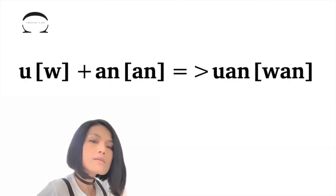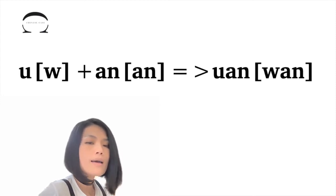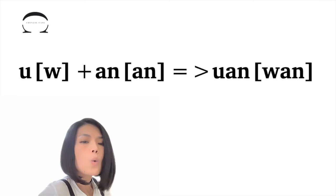After you have mastered the AN, we move on to the UAN. To construct the UAN sound, we just add the semi-vowel W in the beginning. Like this: W-AN, WAN.